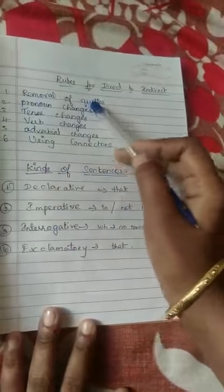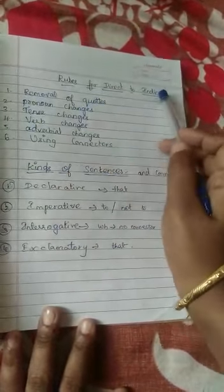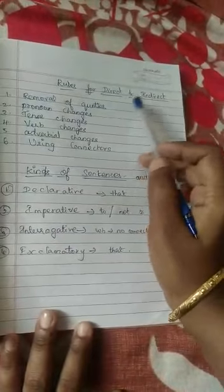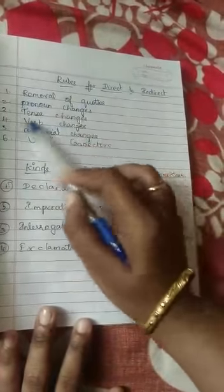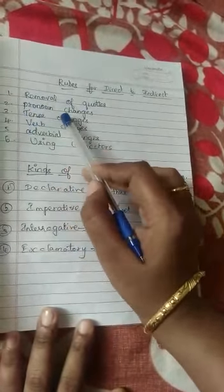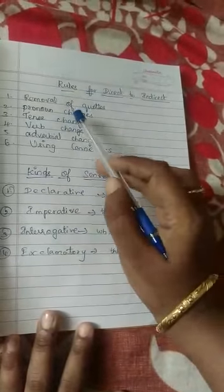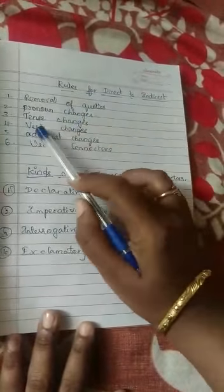When they speak, they will use direct words. When we are changing into indirect, we have to use he, she, or it. Then next, tense changes. When the present tense is used, we are changing it into past. If they are given in past, we will use past participle.